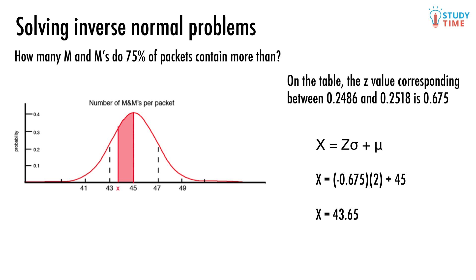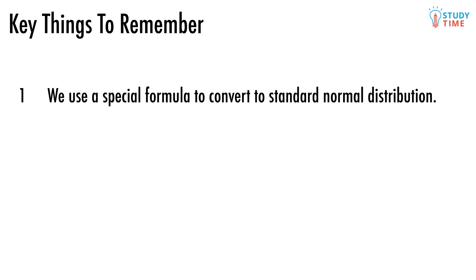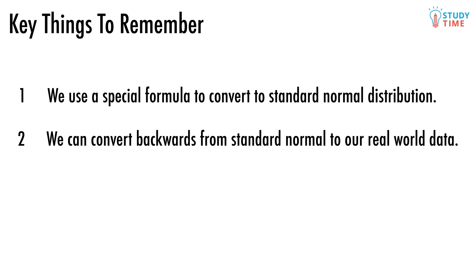Which means that exactly 75% of all packets of M&Ms, according to the numbers we made up, will contain more than 43.65 of those chocolatey delights. How wonderful. Remember, we use a special formula to convert to standard normal distribution. We can convert backwards from standard normal to our real-world data.